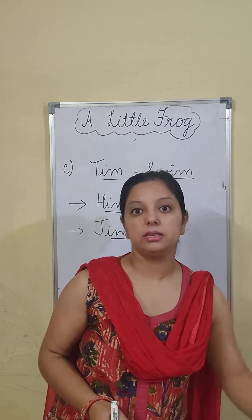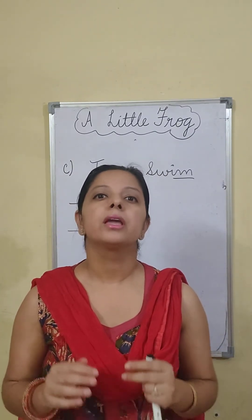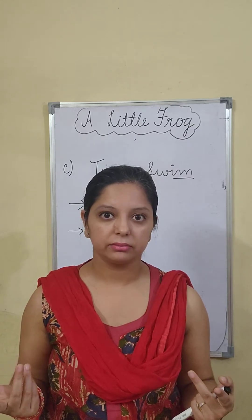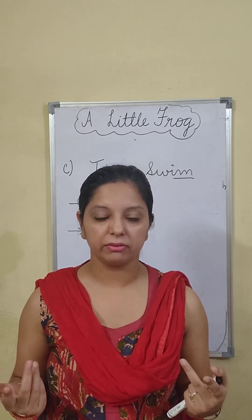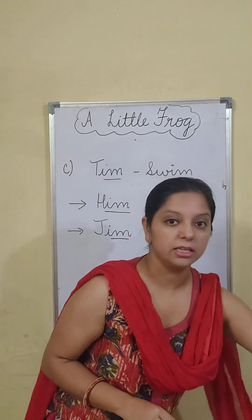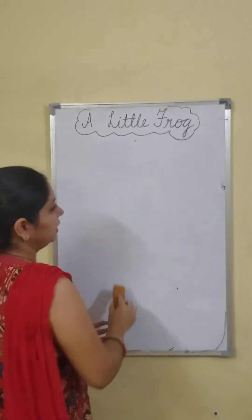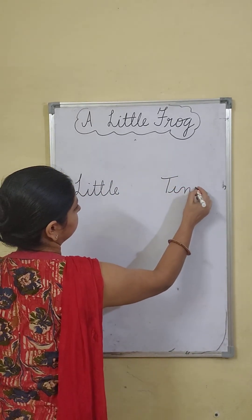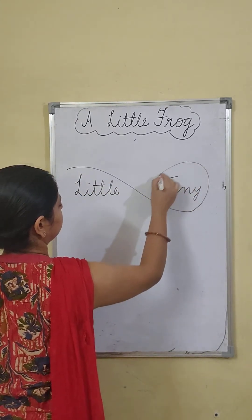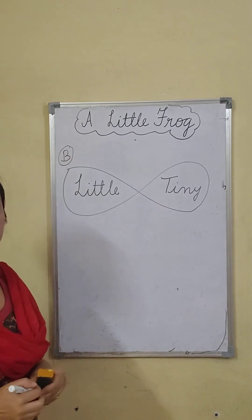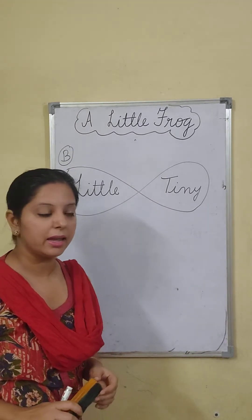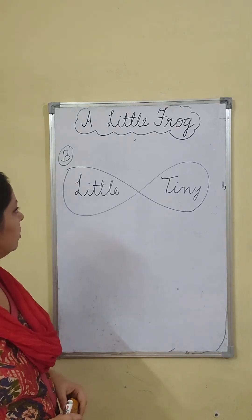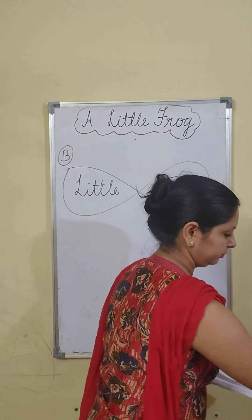After this, let's discuss similar meaning words — same matlab waale, ek hi matlab waale. Is poori poem mein aapne koi aise do words dekhe jinka matlab same hai? You remember? See — in the very beginning of the poem: little and tiny. Now you got it? Little and tiny — they both mean the same. In dono ka ek hi matlab hai — little bhi chota hota hai aur tiny bhi chota hi hota hai.